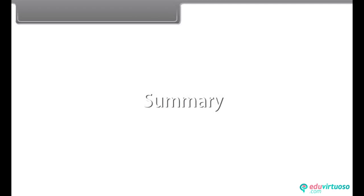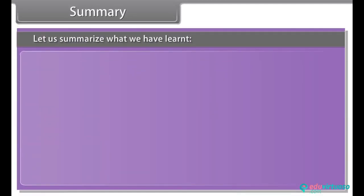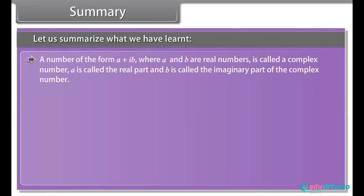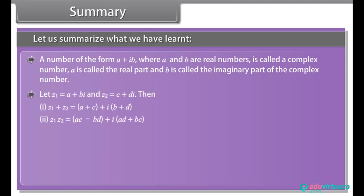Summary: A number of the form A plus B iota, where A and B are real numbers, is called a complex number. A is called the real part and B is called the imaginary part. Let Z1 equal A plus B iota and Z2 equal C plus D iota. For any integer K, the powers of iota follow a cyclic pattern.